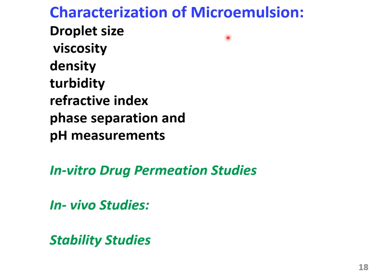The microemulsion system so formed has to be characterized in order to understand its physicochemical properties as well as predict its behavior in vivo. The important tests that need to be carried out are determination of the droplet size, viscosity, density, turbidity, refractive index, extent of phase separation, and pH. Droplet size can be measured by using the dynamic light scattering technique. Polydispersity can also be studied using the Abbe refractometer, and the type of microemulsion can be determined by measuring the electrical conductivity.